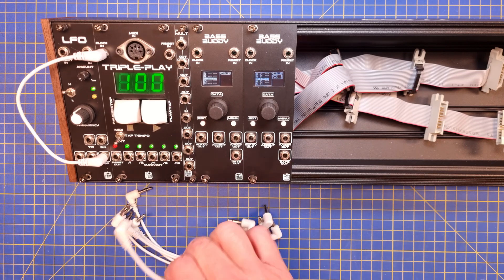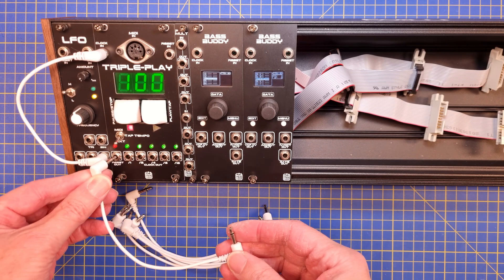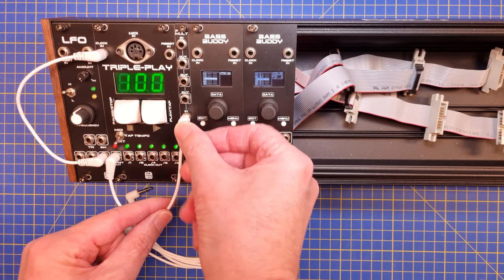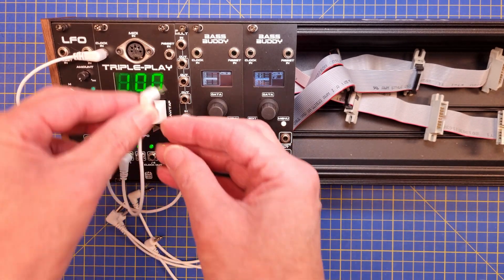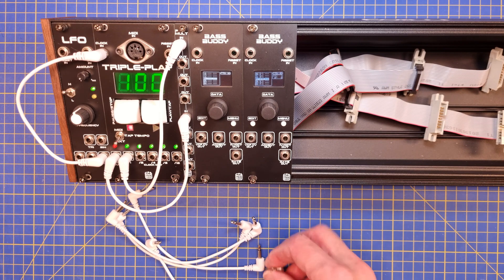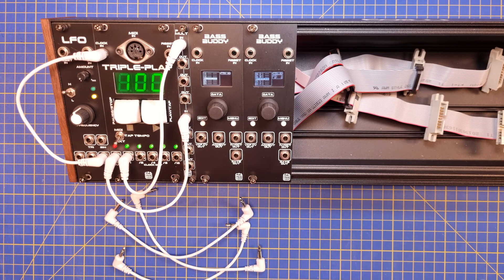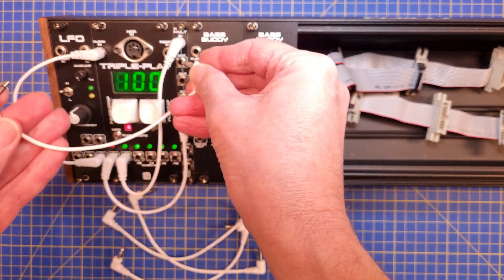In this first demo, I will show how to split the clock and reset signal from a clock generator to two separate sequencers. The upper and lower half of the mult will be split into two separate one-to-three mults. The upper one for the sequencer clock and the lower one for the sequencer reset.